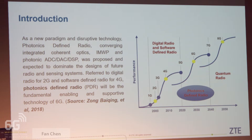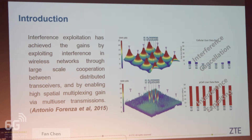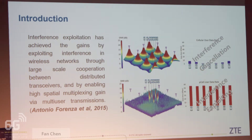The detailed description of photonic-defined radio refers to our article published in 2018. Interference exploitation has achieved gains by exploiting interference in wireless networks through large-scale cooperation between distributed transceivers and by enabling high spatial multiplexing gain during multi-user transmission. For interference cancellation, the best SNR appears at the base station while UEs have poor SNR, requiring lower transmission rates. For interference exploitation, the best SNR appears at the UEs, so it can achieve a much higher transmission rate.